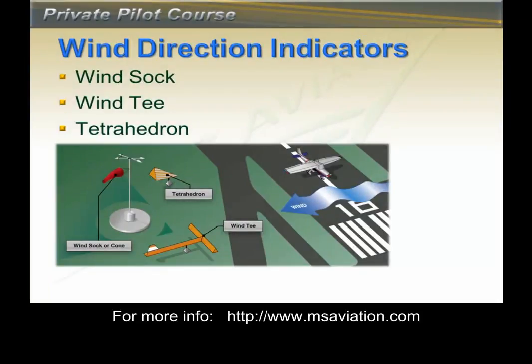Somewhere on the airport you'll find some kind of wind indicator. There are three in widespread use: the wind sock, the tetrahedron, and the wind tee. The wind sock is the most common as it is the only indicator that shows both wind direction and strength. The tetrahedron's pointed end points in the direction of the landing runway as it automatically turns into the wind. The wind tee points into the wind and also points in the direction of the landing runway. The runway number closest to the small end of the wind sock tells us the landing runway.